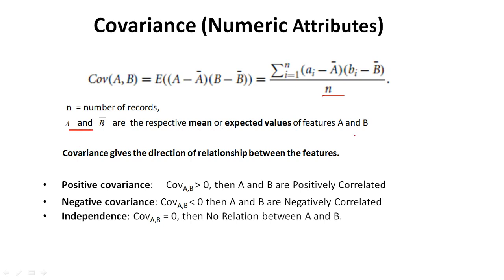Here, n is the number of records, and a-bar and b-bar are the respective means of features A and B. The mean is the average value of the feature — for example, if a feature has 10 values, the average of those 10 values gives the mean. a_i is any random value of feature A, and b_i is any random value of feature B. We are finding the correlation between features A and B.